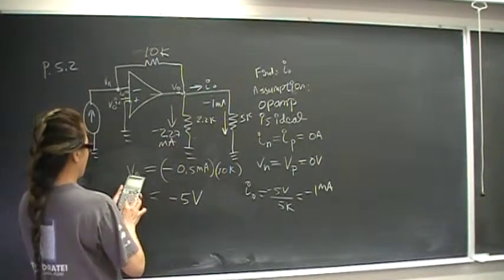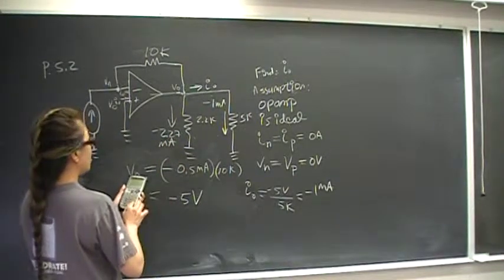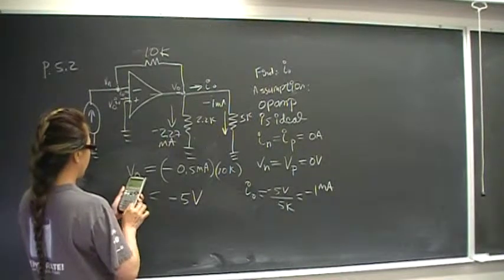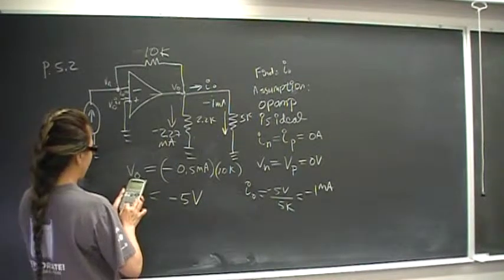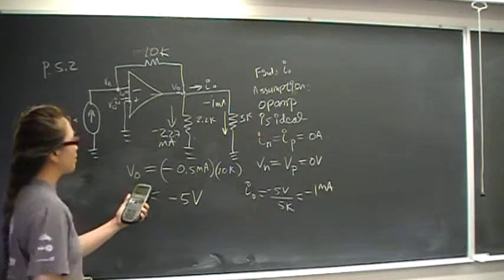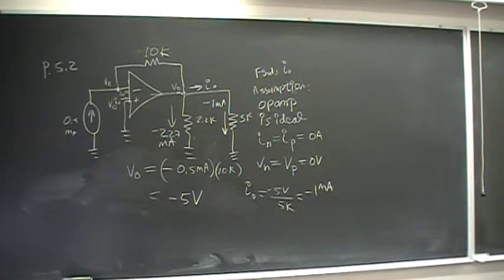And let's see, 2.27 plus 1 is 3, divided by 0.5, so we amplified the current by a factor of 6.54. Okay.